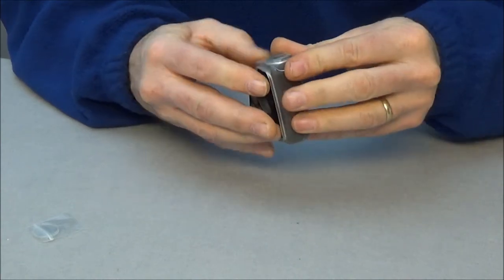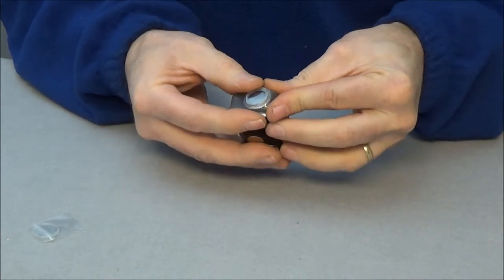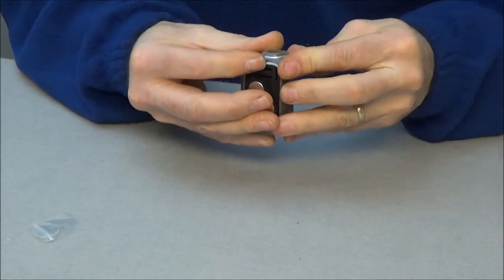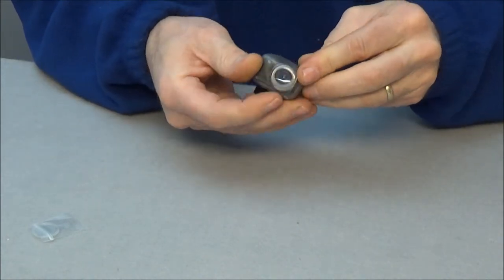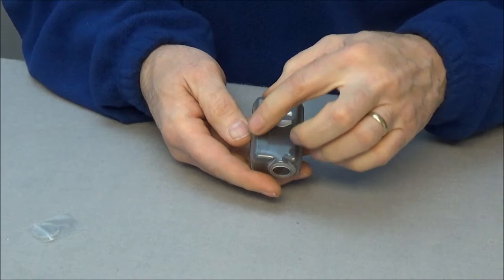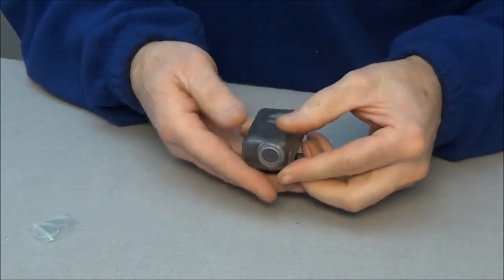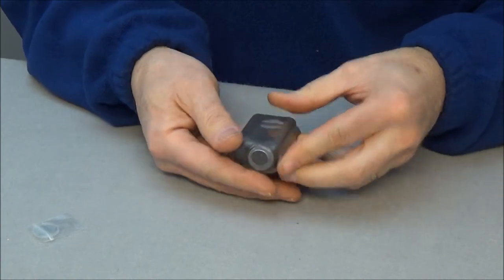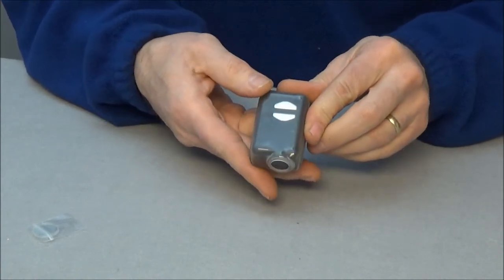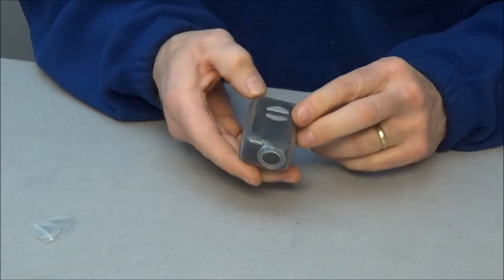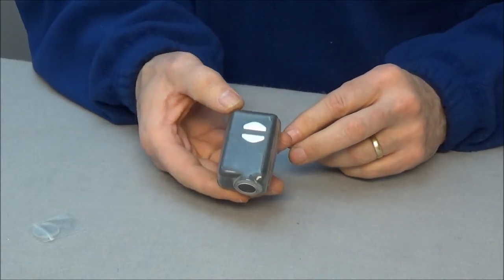Once you've got that on, you just want to make sure all the corners and the button area on the top here is positioned properly over the buttons. If it's not, you can work the corners a little bit and work it into position. That's the assembly procedure and your camera is ready to use.